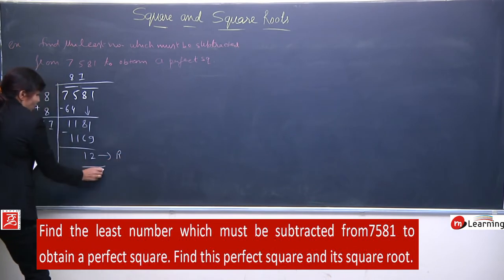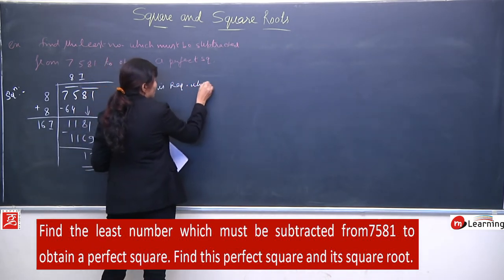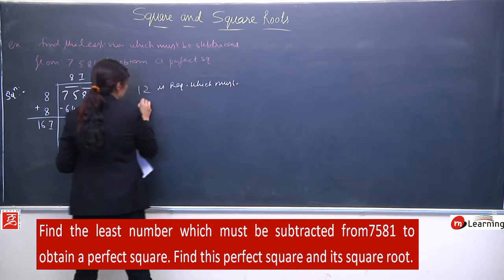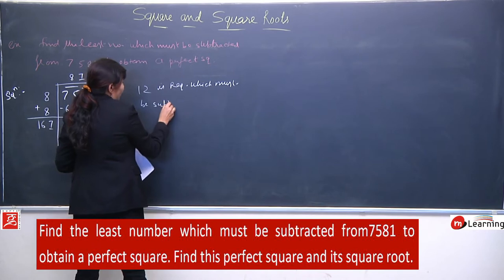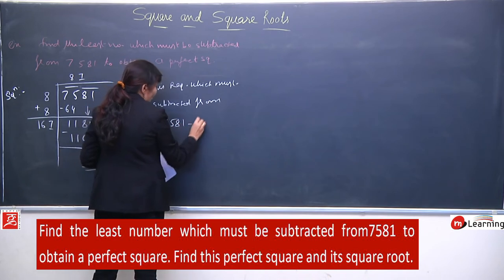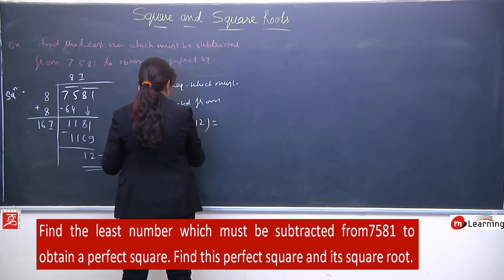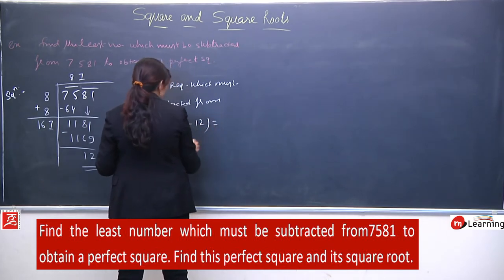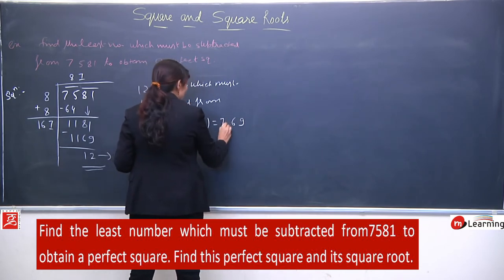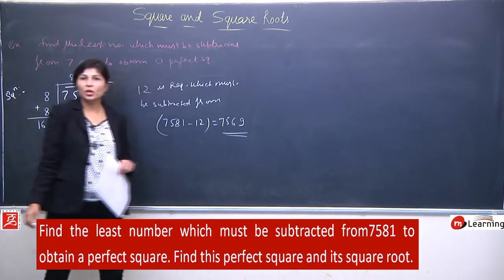So yahan par: 12 is the least required number which must be subtracted from 7581. Finally aapko result milega 7581 - 12 = 7569. So this is your answer after least subtraction. 7569 is a perfect square.